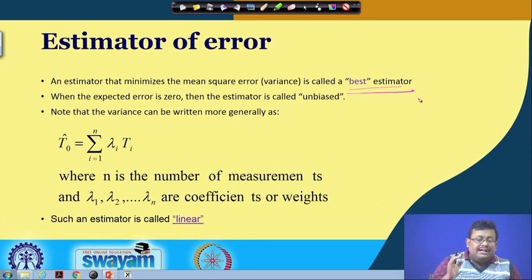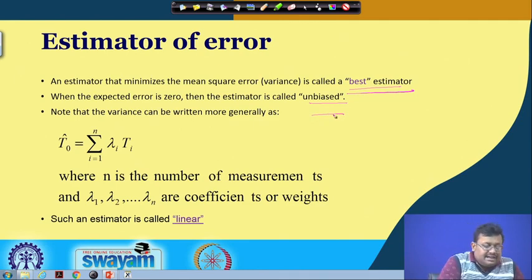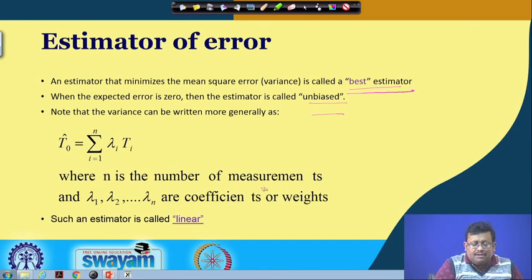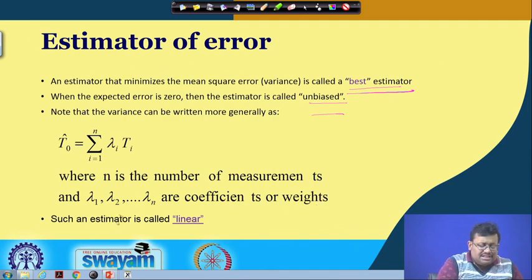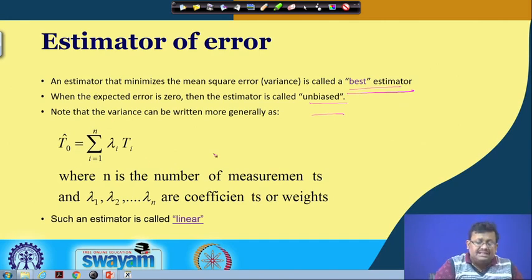When the expected error is zero, the estimator is called unbiased. The variance can be written more generally as a summation of lambda-i times ti for points 1 to n, where n is the number of measurements and lambda-1 through lambda-n are the coefficients or weights. Such an estimator is called a linear estimator because we are linearly expressing this value.